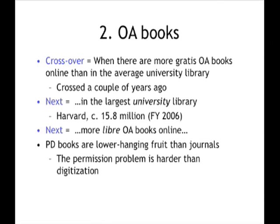The next crossover is when we'll have more gratis open access books online than in the world's largest academic library, which is this one. I only got a dated estimate for the Harvard Library — almost 16 million volumes, though that includes bound back issues of journals, not just monographs. But the Google library project, even as outlined in 2004, aimed at 15 million volumes, so it may not be long before we cross that point as well. Then the next crossover after that will be when we have more libre open access books online than in the average or largest academic library — that's many years ahead.